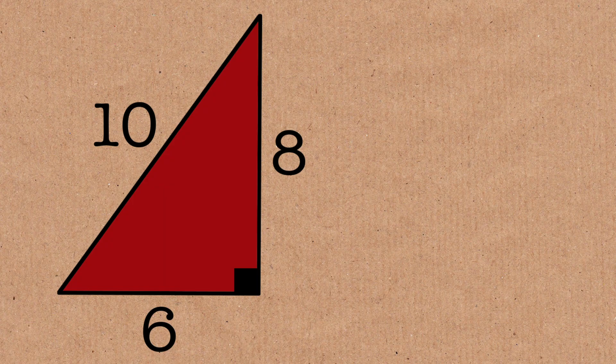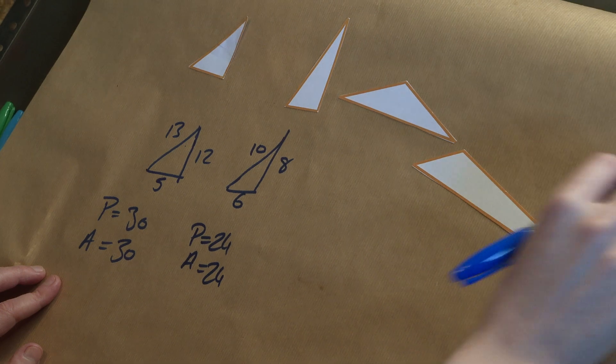So if I do my next one, you can see this one's a right-angled triangle as well. Perimeter is 24, area is 24. And let's have a look at these next three.